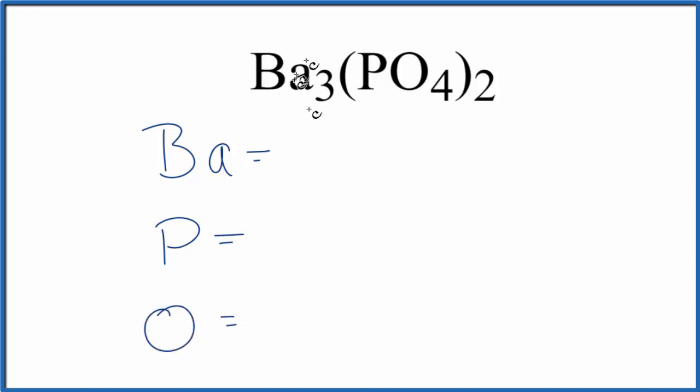For the barium, we have a 3 as our subscript. That means there's 3 barium atoms. For the phosphorus, there's nothing after it. When there's nothing after the element symbol, we consider the subscript to be 1. So we have 1 phosphorus atom,